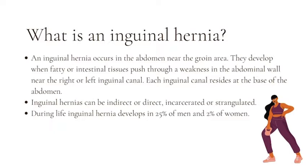What is an inguinal hernia? An inguinal hernia occurs in the abdomen near the groin area. They develop when fatty or intestinal tissues push through a weakness in the abdominal wall, either the right or left inguinal canal. Each inguinal canal resides at the base of the abdomen.